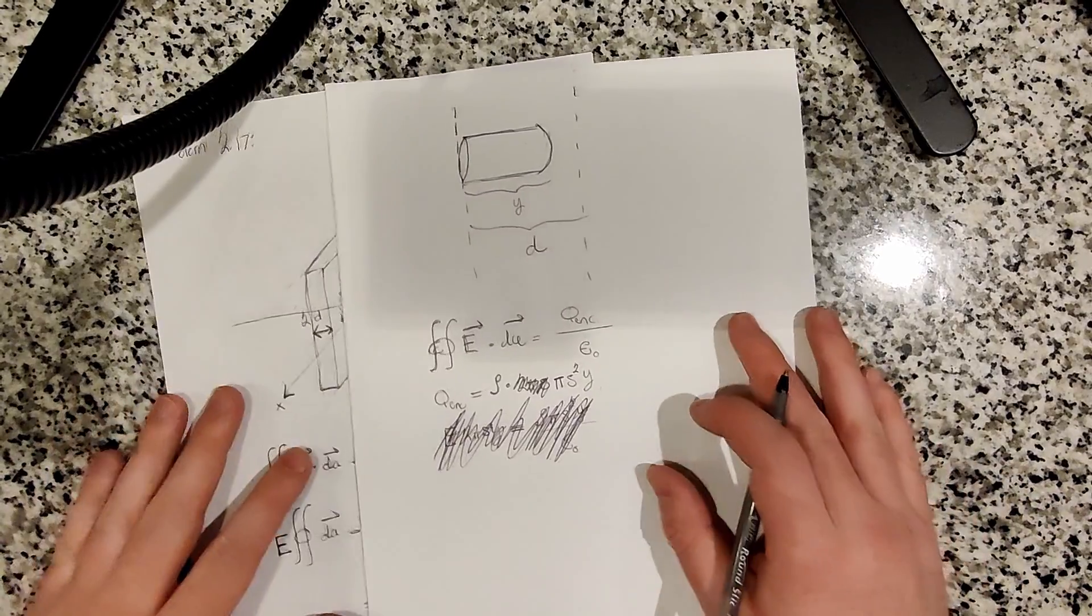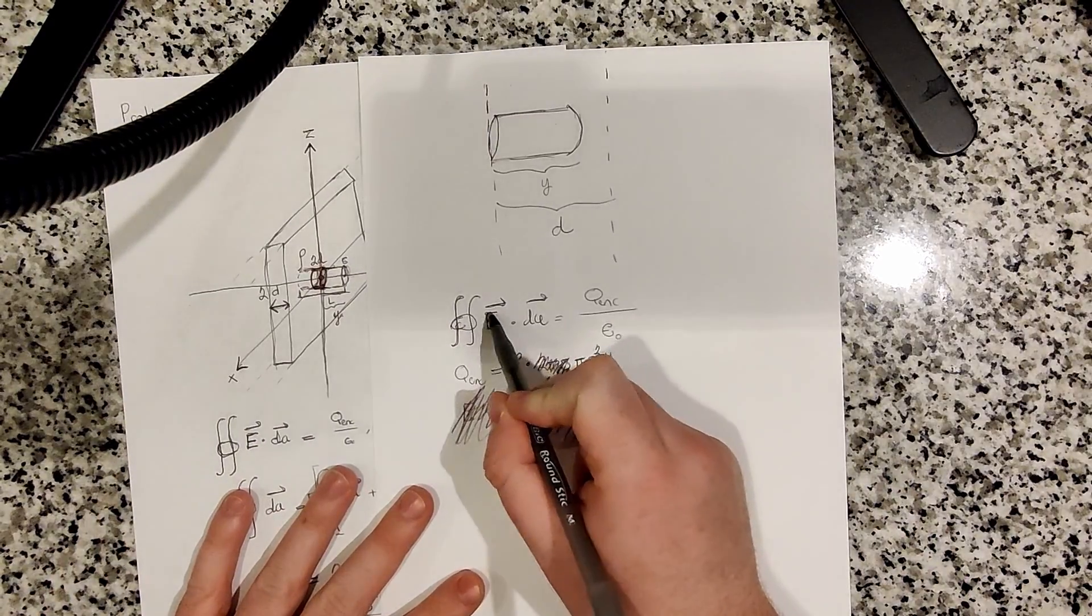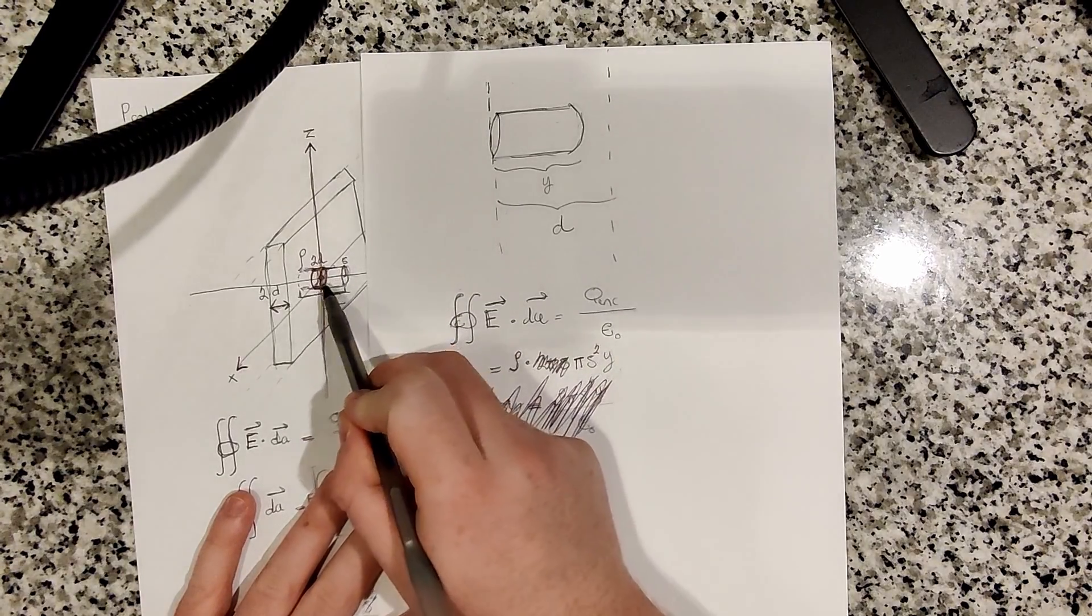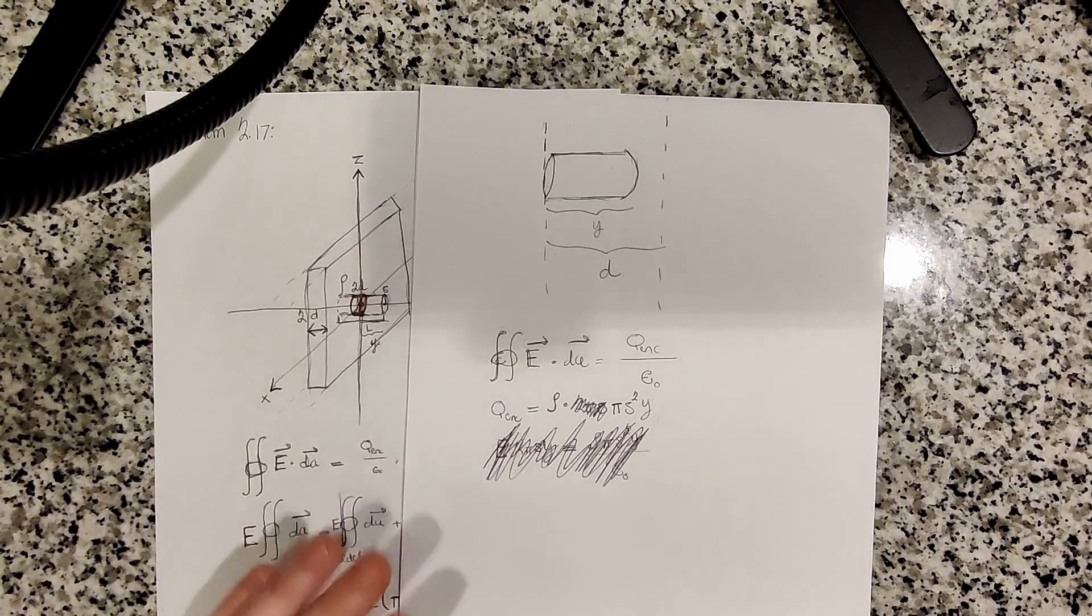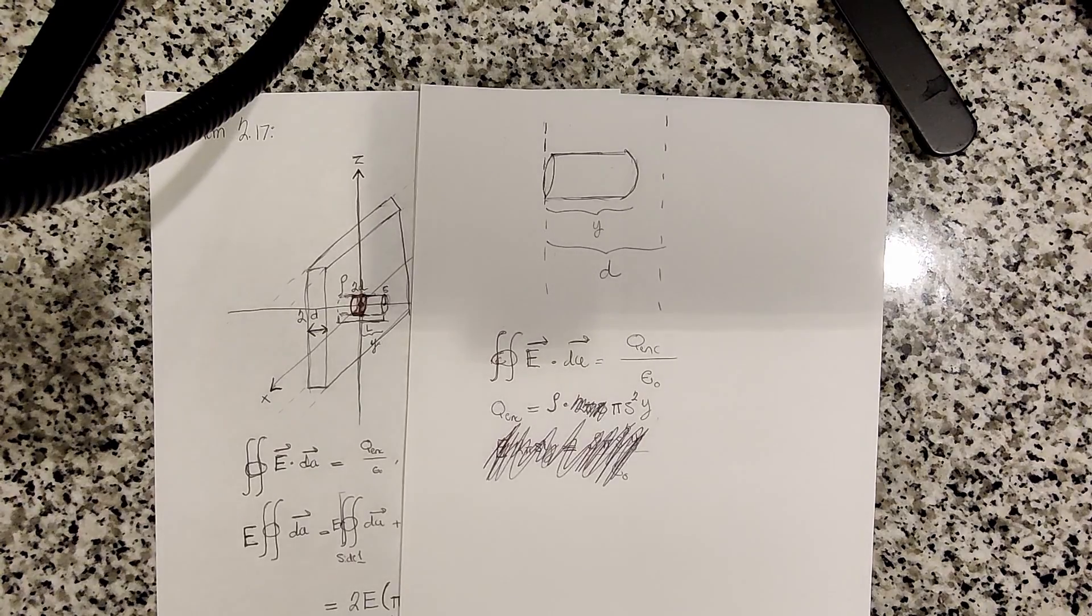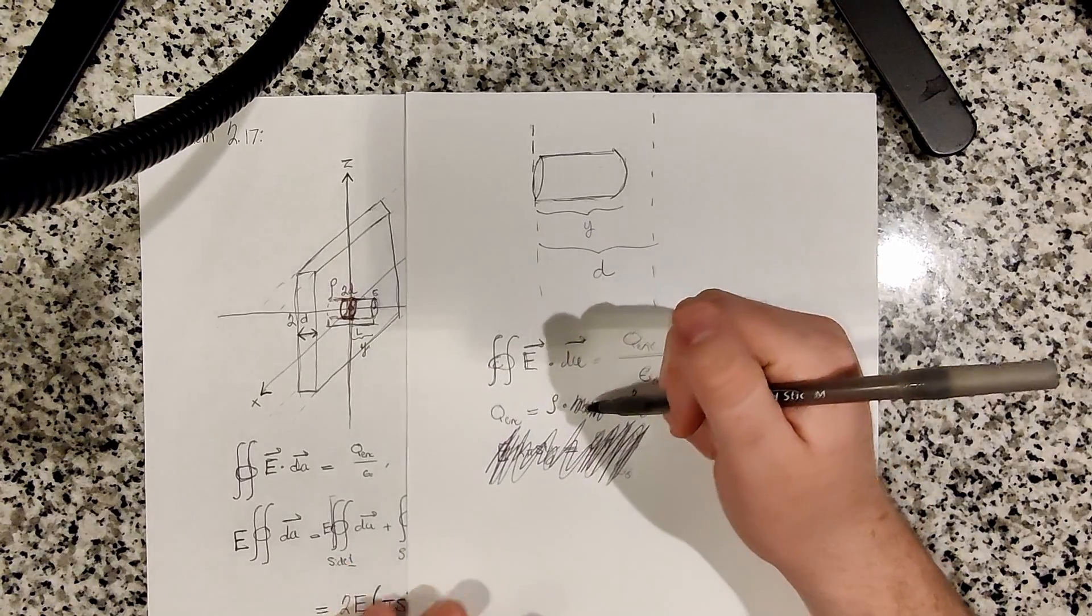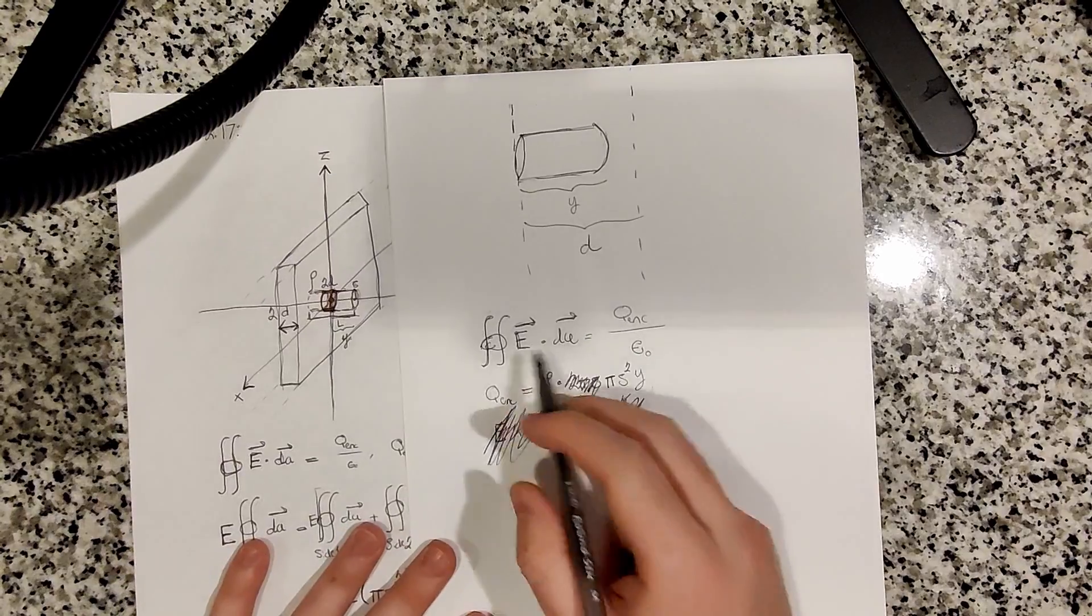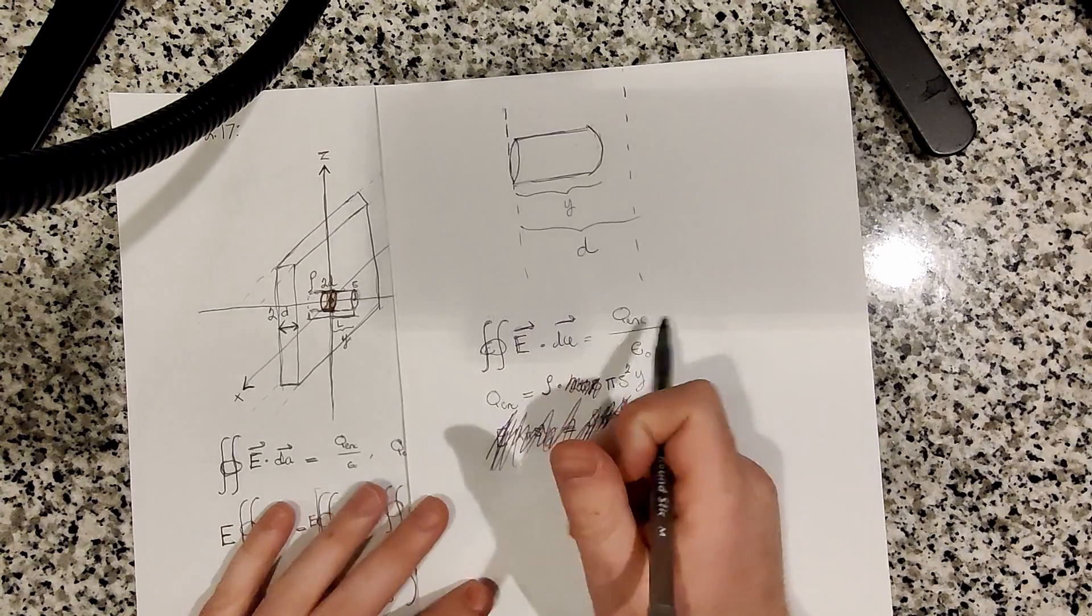Moving on to the left side of our equation, which is the flux integral. If you think about it in terms of symmetry, for any given distance y away from the center of our slab, due to symmetry, it should be a constant electric field along the xz plane. There should be no change in the electric field along the xz plane. So at any given distance y away from the center, you should have a constant electric field, meaning that the electric field E can be pulled out of the integral.